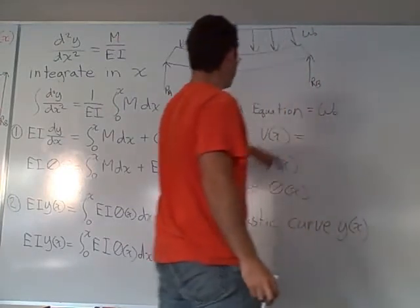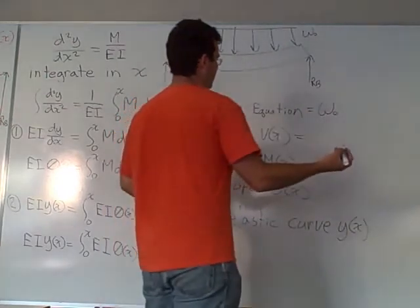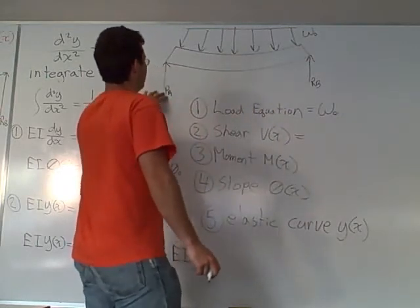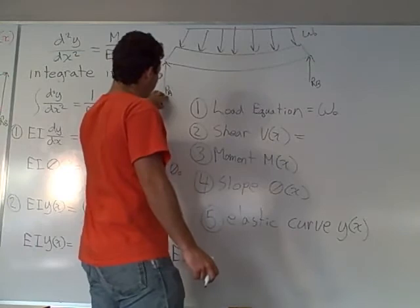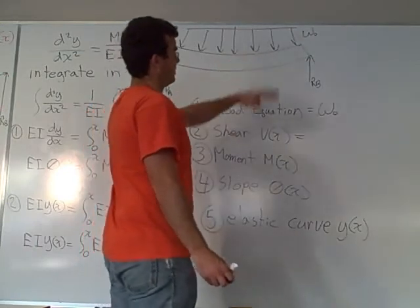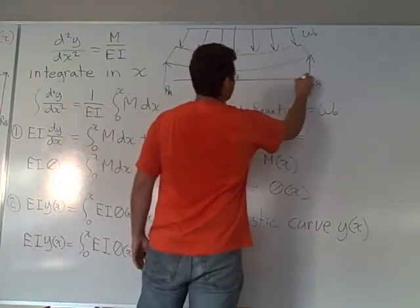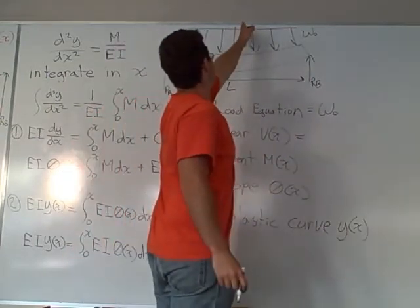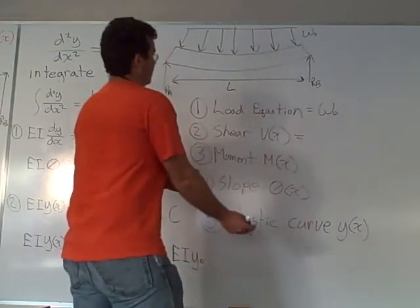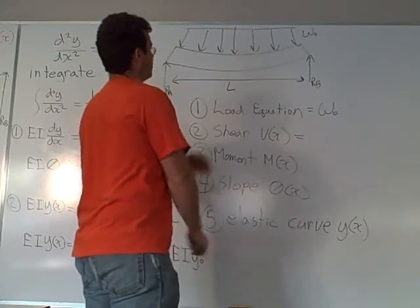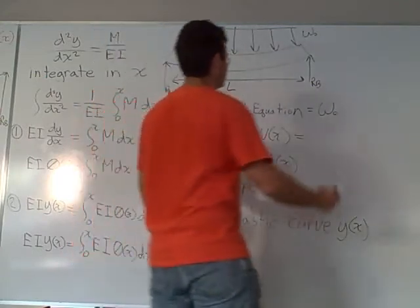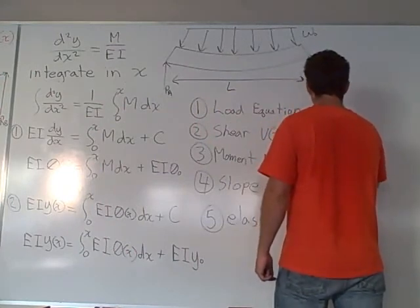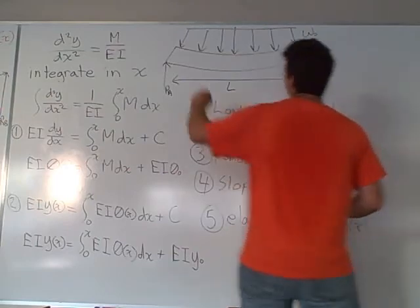So then our shear - we need to determine our reaction at A in order to find our initial shear. Our initial shear is going to be, if the length of our beam is L, you recall that the load will be concentrated right at the center. So A is going to take half the load, so it's going to be W_0*L over two.